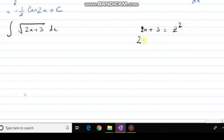Again, both sides if I differentiate with respect to the variable, 2dx equals 2z dz. So this will be integration of root over of z square. 2x plus 3 is z square, root over of z square.